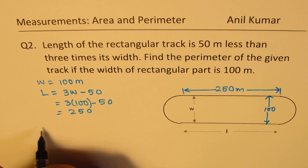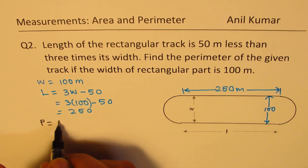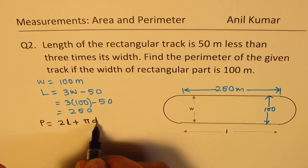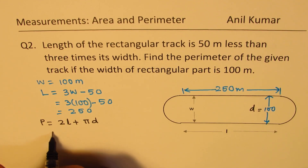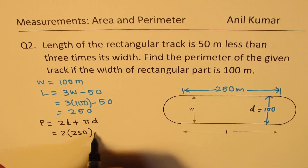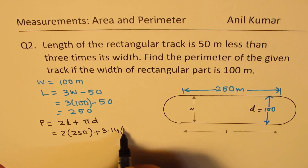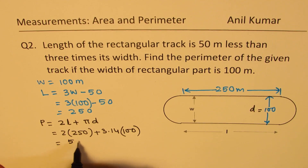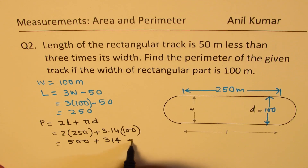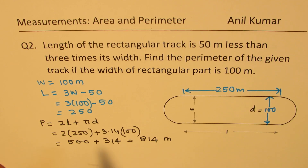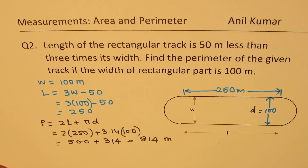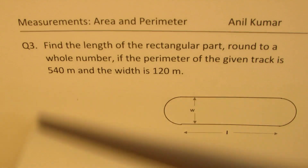Now we need to find the perimeter using a similar calculation. Perimeter is 2 times the length plus π times diameter d, where diameter d equals 100. So we get 2 times 250 plus 3.14 times 100. These are easier values to calculate: 500 plus 314 gives us 814 meters as the perimeter. So if a question doesn't allow a calculator, such round numbers make it manageable.